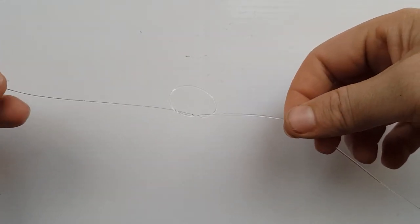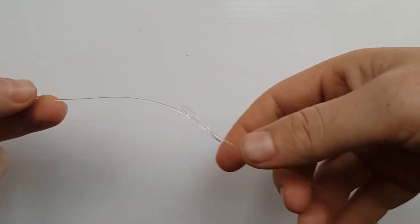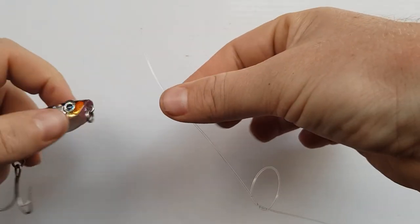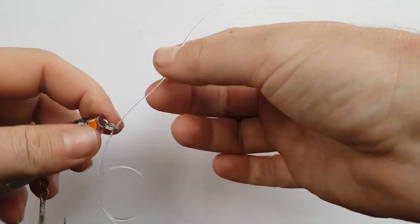Now I'm going to tie this really big so you can see it, then grab the tag end and go through the split ring.